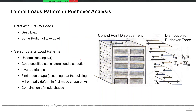Something about the pushover load pattern: which pattern should we select to push a building, and which pattern is more representative of future ground shaking? Because future ground shaking is random, the effective earthquake forces are random along the story height. So we cannot apply a random force pattern to push our building; we have to select a simple lateral load pattern that is simple but somehow represents the loading expected in future ground shaking.